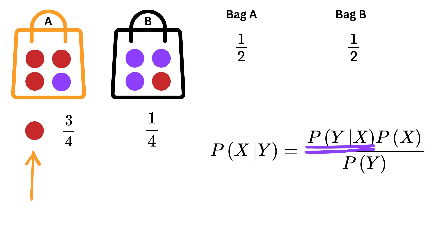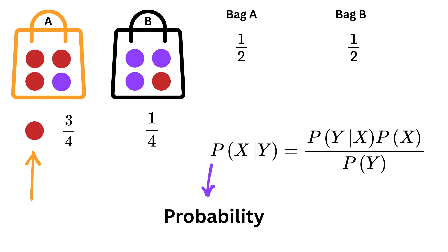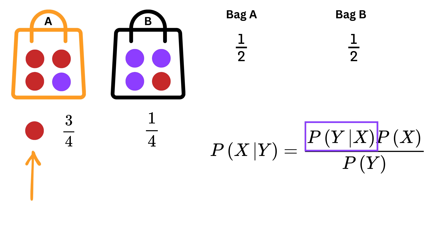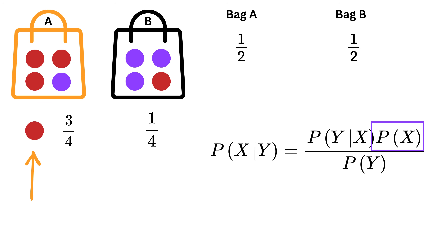The formula states: probability of X given Y equals probability of Y given X, multiplied by probability of X, divided by probability of Y. The symbol P stands for probability. The vertical bar means 'given' — that some result has already happened and we're figuring out the chance of something else based on that. So P of X given Y means: what is the probability of X if we already know that Y has happened? P of Y given X means: what is the chance of getting Y when X is true? P of X is the prior chance of X happening on its own, and P of Y is the total chance of Y happening no matter how.